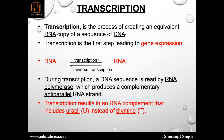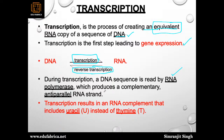As we discussed yesterday, transcription is the process of creating an equivalent RNA copy of the sequence of DNA — neither more nor less, just an equal amount. Transcription is the first step leading to gene expression: DNA goes to RNA. And RNA going back to DNA is called reverse transcription. During transcription, a DNA sequence is read by RNA polymerase, which produces complementary anti-parallel RNA strands.